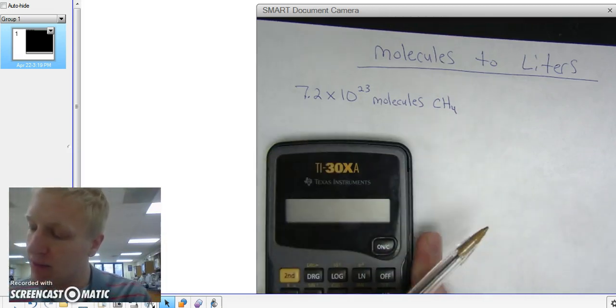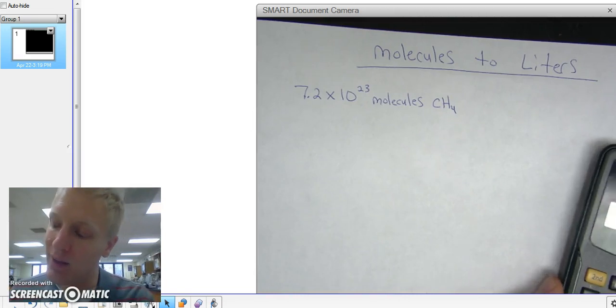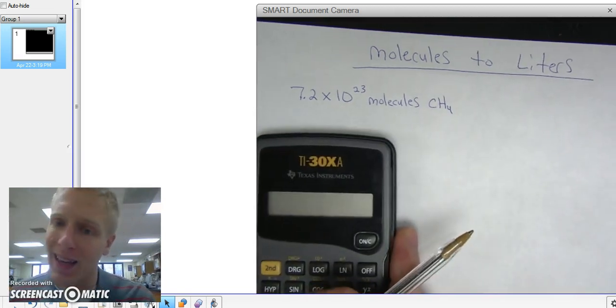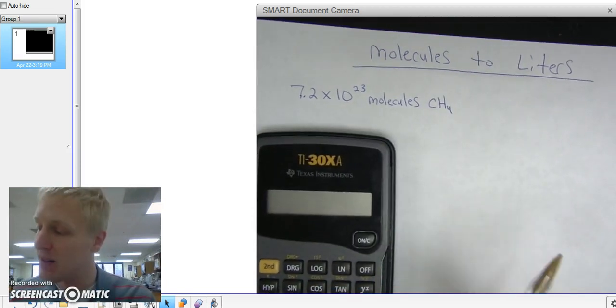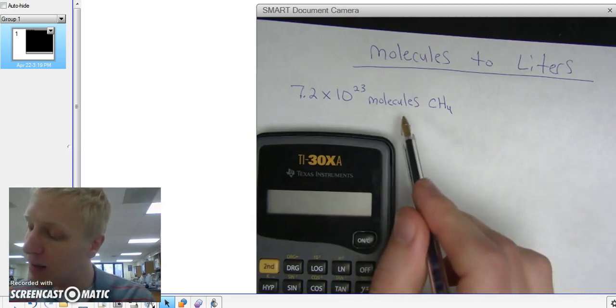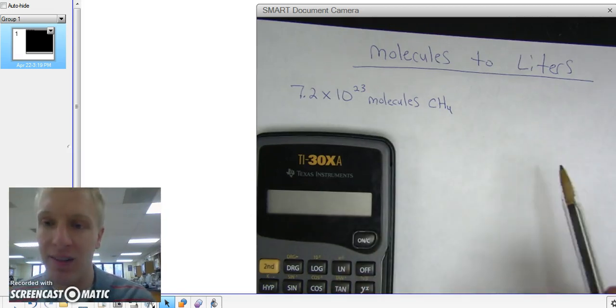So I'm going to start with 7.2 times 10 to the 23rd molecules of CH4 and I want to convert this to liters. So my starting point is molecules, my ending point is liters.